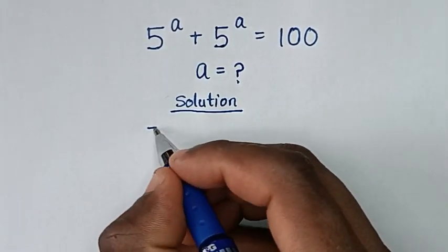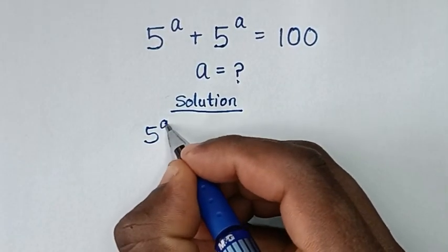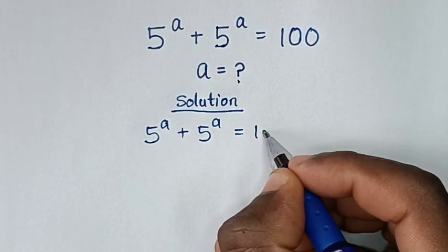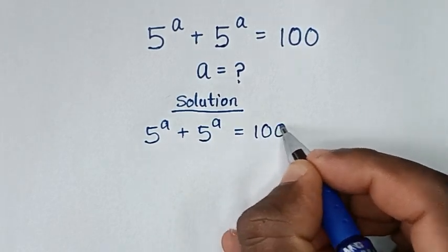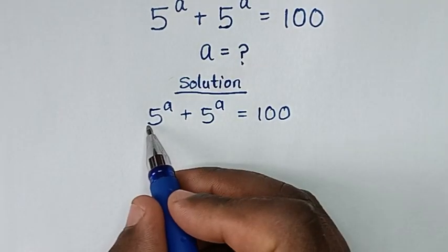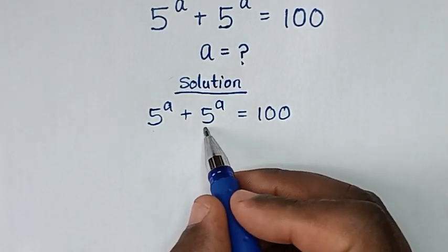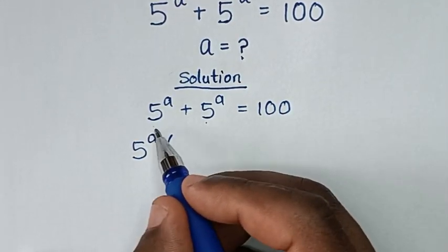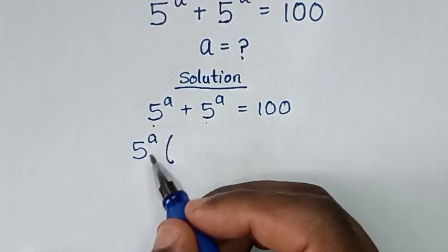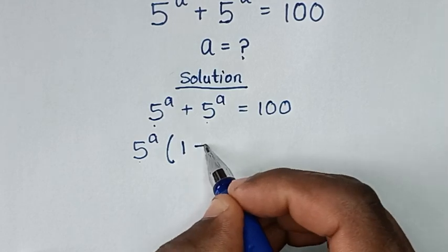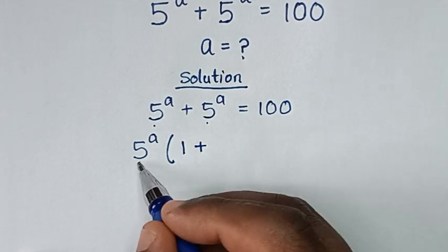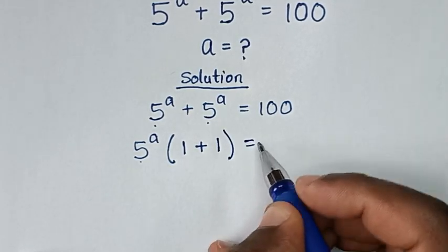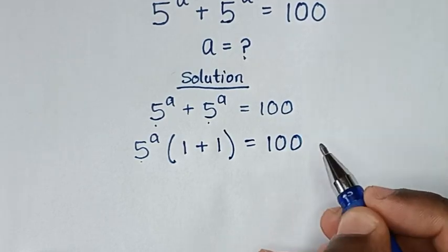From the problem, 5 power of a plus 5 power of a is equal to 100. Here, 5 power of a is common, so we take 5 power of a out of the bracket. Then 5 power of a divided by 5 power of a is 1, plus 5 power of a divided by 5 power of a is 1, in bracket, is equal to 100.